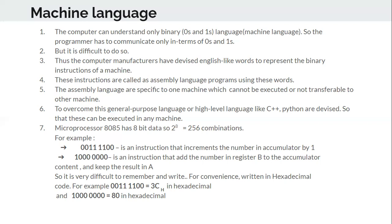Any high-level language you type is processed by a compiler, which converts the instructions into object code — that is, the respective machine code. These instructions, which work for a particular microprocessor, are otherwise called assembly language. Assembly language programs use the instruction set and are specific to one machine, which means they cannot be transferred to another machine. For example, a program for finding the factorial of a number written for an Intel processor cannot be executed on a Zilog processor if you use assembly language, because those are specific to a particular machine only.